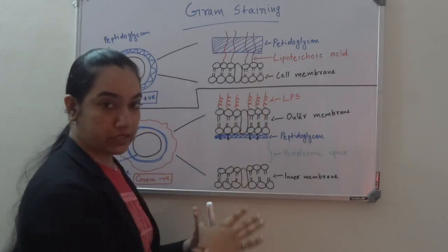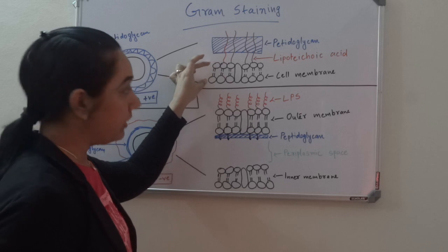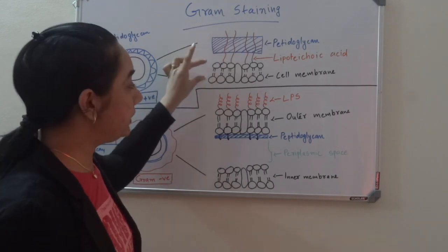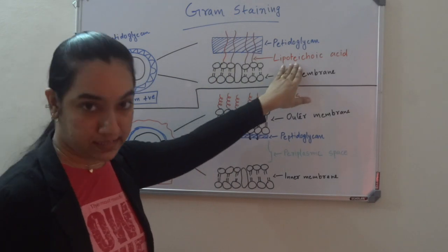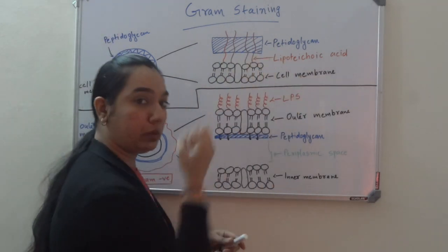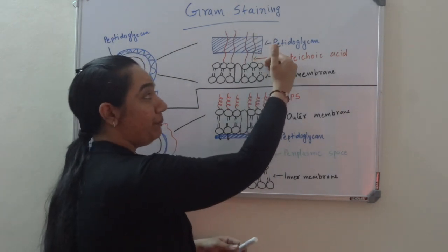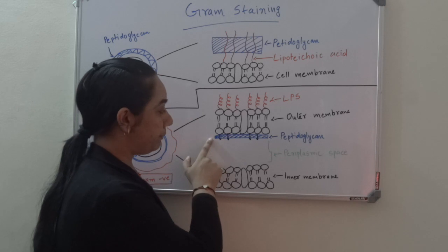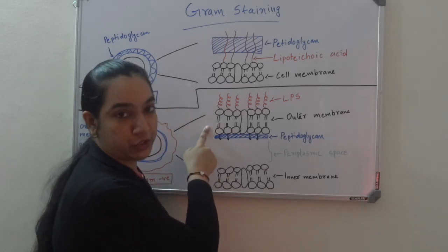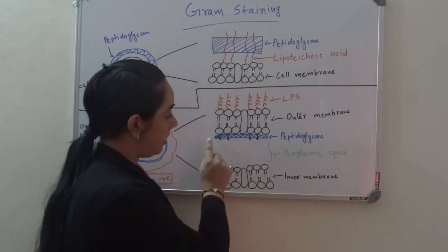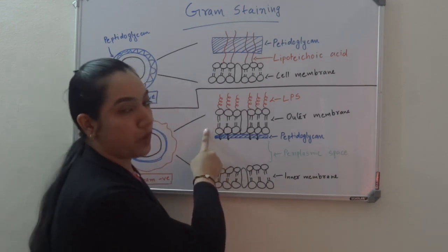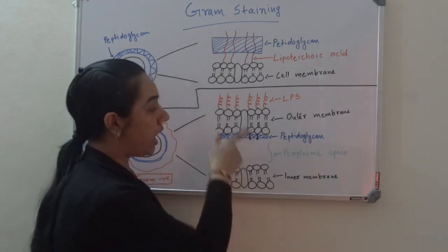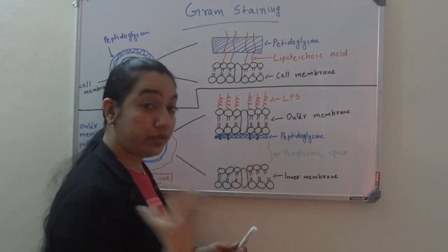Zooming in, gram positive bacteria has a lipid bilayer and a really thick peptidoglycan layer. This peptidoglycan layer is anchored to the lipid bilayer by lipoteichoic acid, which holds the peptidoglycan by attaching to the lipids of the bilayer. In gram negative, there is a cell membrane, a very thin peptidoglycan layer, and an additional outer membrane. The peptidoglycan is not attached to the inner membrane but to the outer membrane.